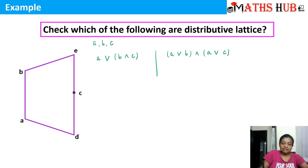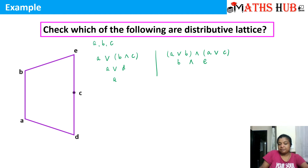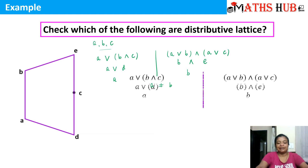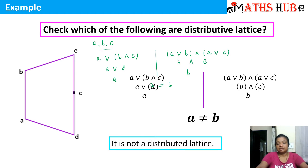Now what is B meet C? B and C are meeting for the first time at the point D. And A join D is the element D. Now for the right-hand side: A join B is B, and A join C is the element E. Now B meet E is the element B. So again the first pair we chose does not satisfy the distributive law, and hence we can declare that it is not a distributive lattice.